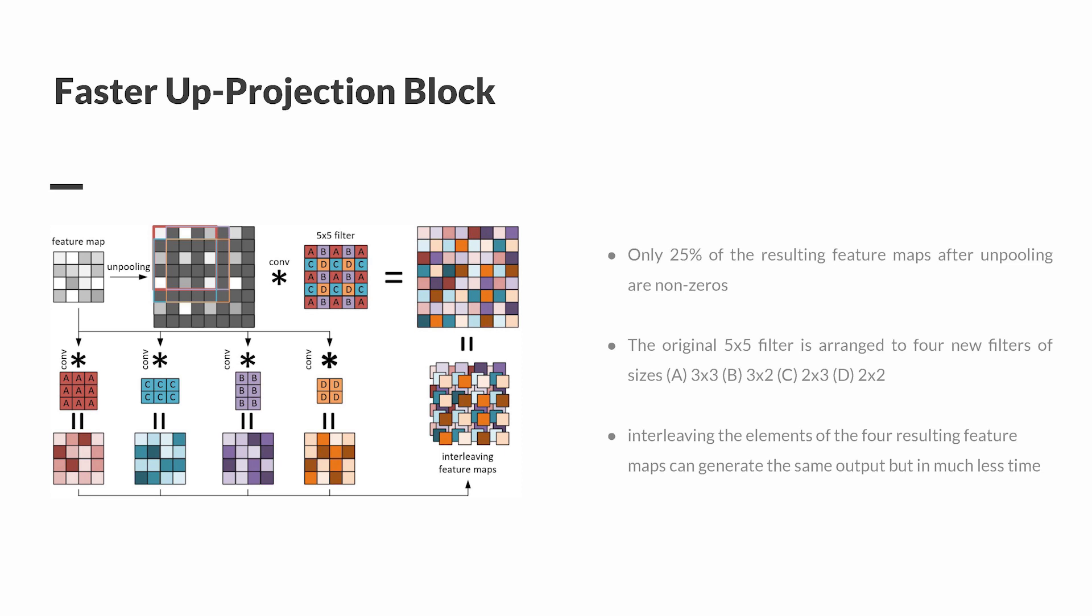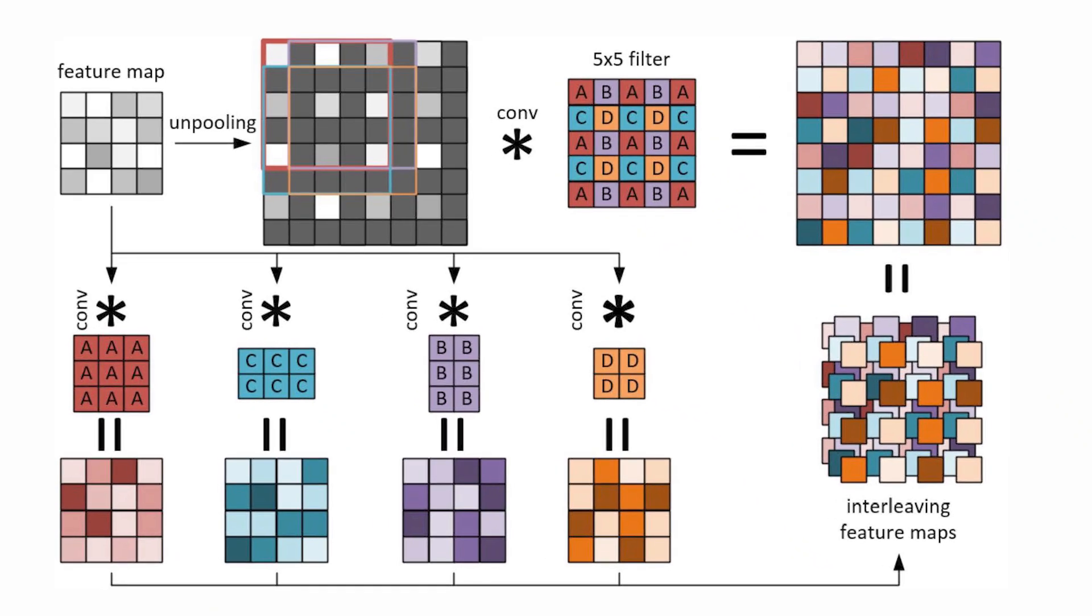The main idea is that during the up-projection process, there are only 25% of the feature maps that are not zero after unpooling. Therefore, in the paper, they change the original filter to four filters of smaller size. Then the four resulting feature maps are interleaved together to become the final output. This way can generate the same output but can make the training much faster.